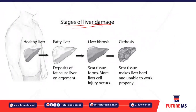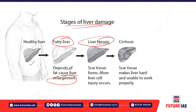The stages of liver damage due to NAFLD begin with a healthy liver, which then becomes a fatty liver due to fat deposition in liver cells, causing liver enlargement. This progresses to liver fibrosis where scar tissue forms. Ultimately, at the final stage, the liver develops cirrhosis — it becomes very hard and is unable to function properly, which can be fatal.